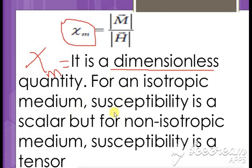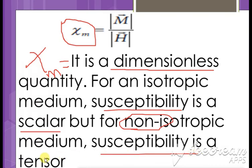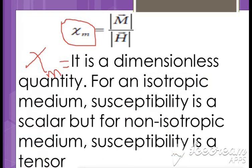For an isotropic medium, susceptibility is taken as a scalar. For a non-isotropic medium, susceptibility is taken as a tensor. This distinction can be asked as a one-mark question: for isotropic medium, susceptibility is scalar; for non-isotropic medium, susceptibility is a tensor. These are the basic properties of the magnetic field.